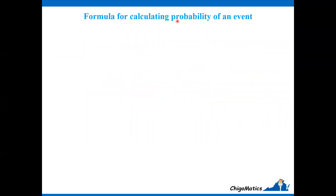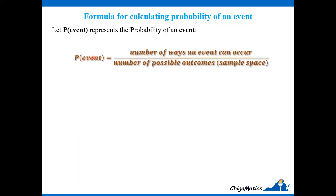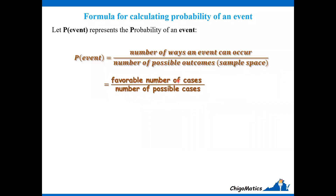Let us look at the formula for calculating probability of an event. Let P(event) represent the probability of an event. Therefore, the probability of an event equals the number of ways an event can occur over the number of possible outcomes, or sample space. We can refine this as: favorable number of cases over the number of possible cases.